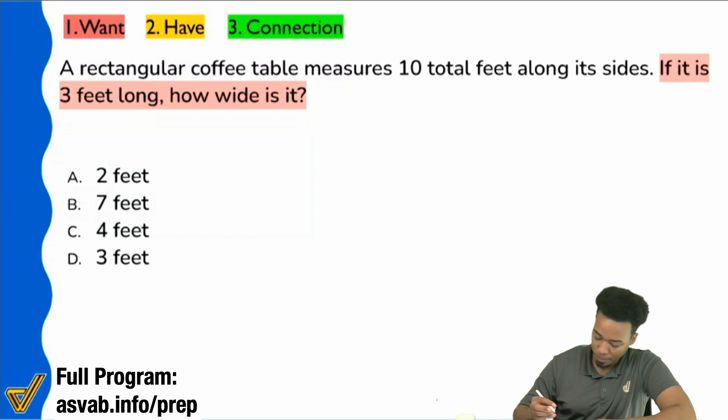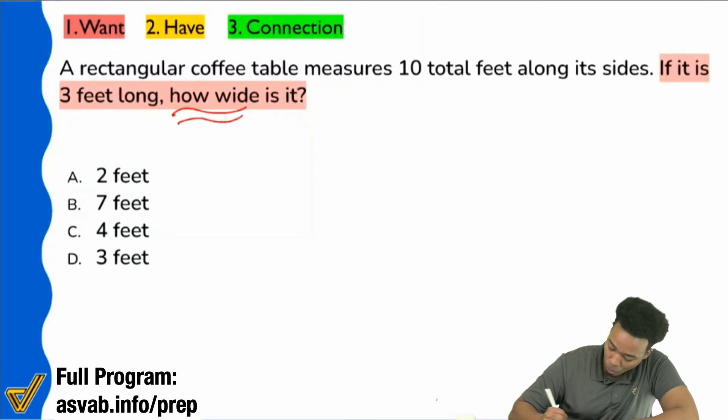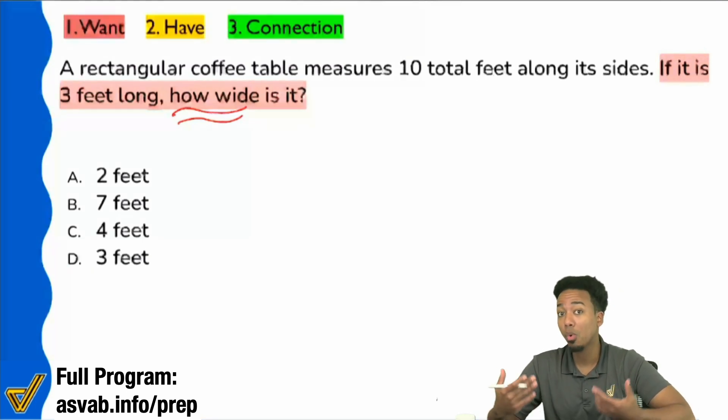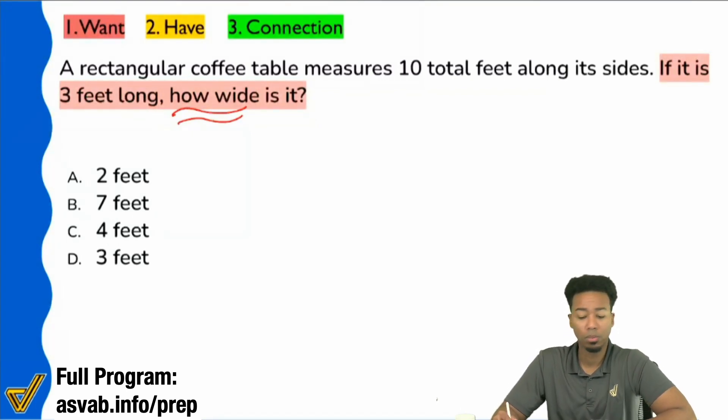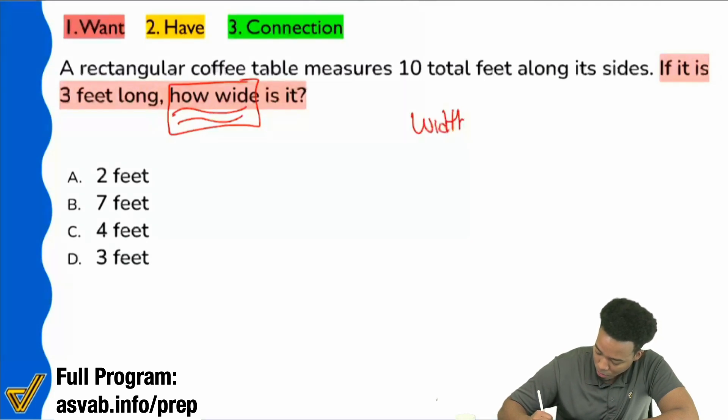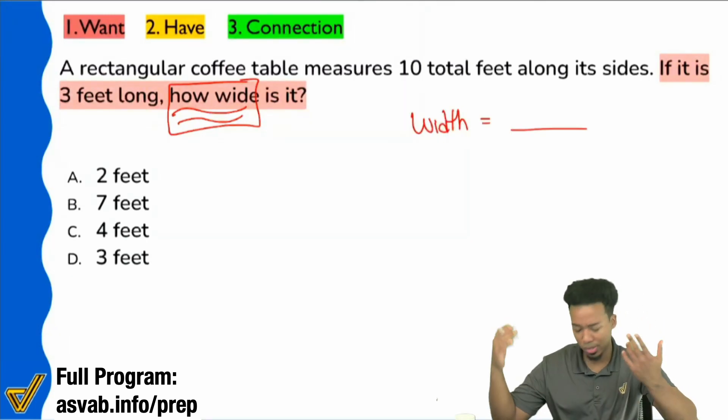Number one, what we want is how wide something is. Everybody, is it true that how wide is the same thing as saying you're looking for the width? Is that true? Cool. I'm glad we agree. So let's go ahead and start by writing that down. We're looking for how wide something is. So we are looking for the width. Width equals something.